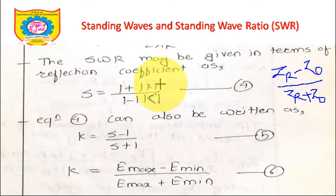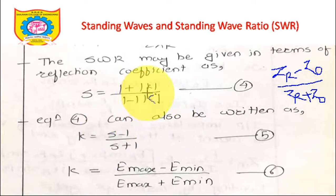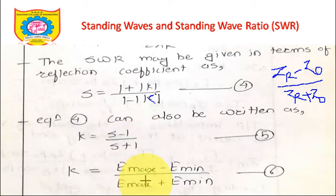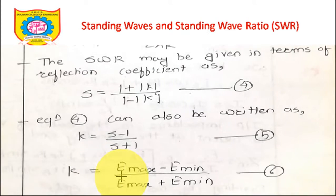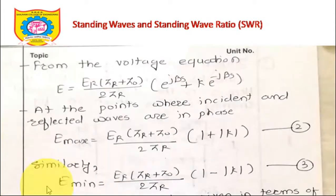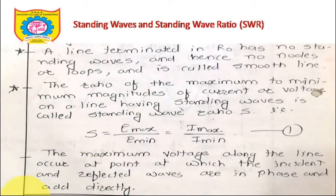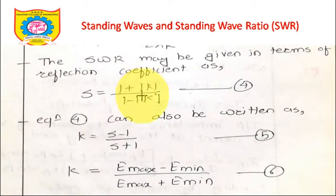The standing wave ratio S and reflection coefficient K are related by S = (1 + |K|)/(1 − |K|). This can also be rearranged to give K = (S − 1)/(S + 1). Substituting S = Emax/Emin, the reflection coefficient can also be written as K = (Emax − Emin)/(Emax + Emin).